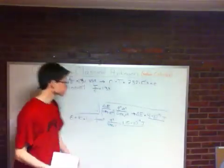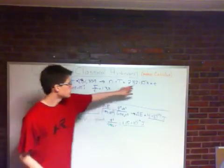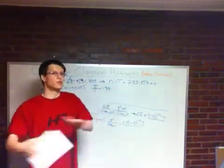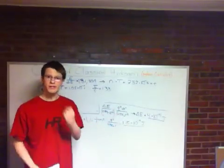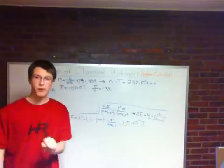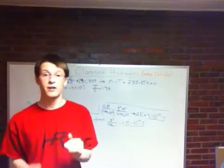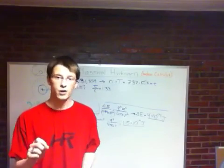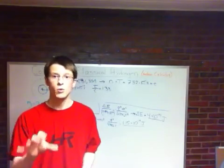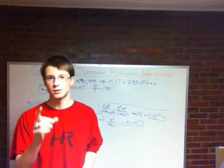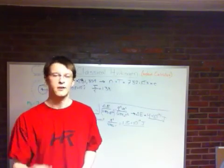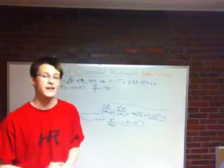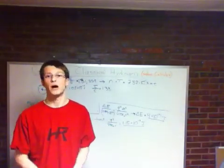Now at this point you might be asking, well, if atoms should collapse in a billionth of a billionth of a second, then how are we existing? And in fact, this tells us something very profound. It tells us that, contrary to what you've been taught throughout all of middle school and high school, electrons do not orbit the nucleus. Let that sink in and think about it. Electrons do not orbit the nucleus. And quantum mechanics actually explains why that is.